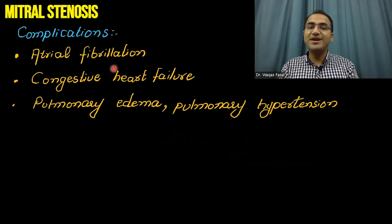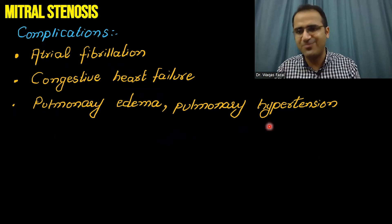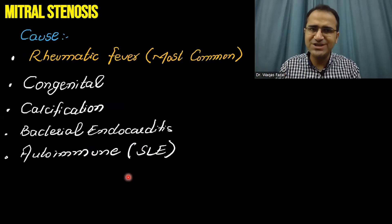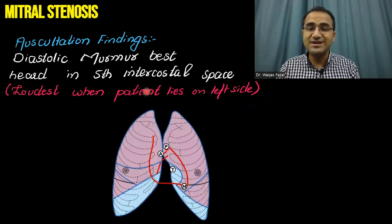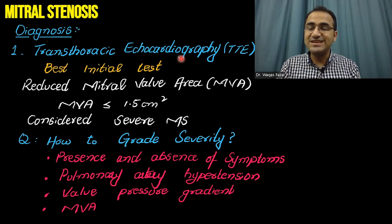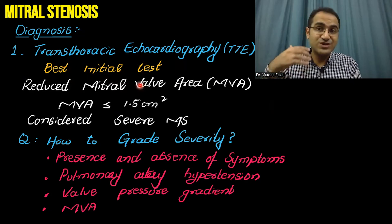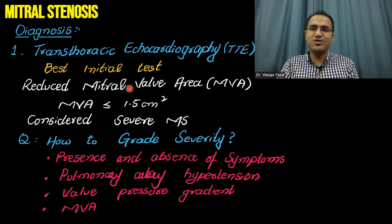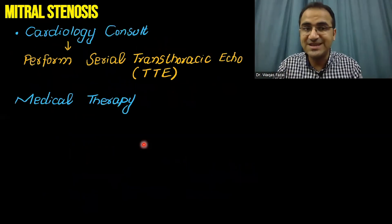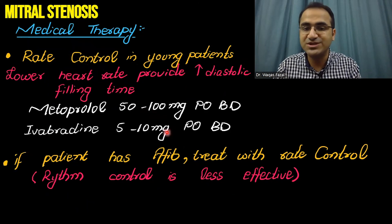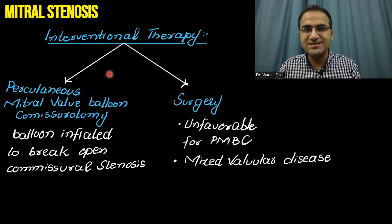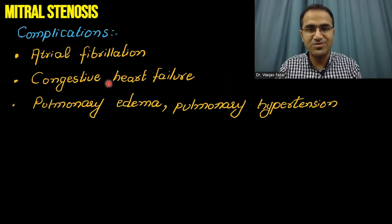Complications of mitral stenosis include atrial fibrillation, congestive heart failure, pulmonary edema, and pulmonary hypertension. In summary: mitral stenosis, symptoms of dyspnea and Ortner syndrome with dysphagia; causes — rheumatic fever being the most common; auscultation — diastolic murmur on the mitral area; examination — mitral facies, irregular heart rate; transthoracic echocardiography as the best initial test and transesophageal echocardiography as the most confirmatory; ECG showing a-fib; chest X-ray showing double density sign; cardiology consult; medical therapy with rate control and anticoagulation with warfarin; interventional therapy — percutaneous balloon commissurotomy or surgery.